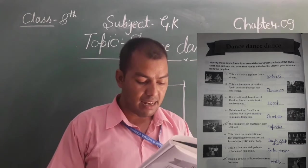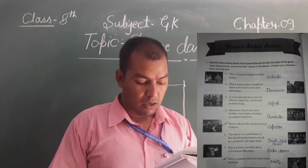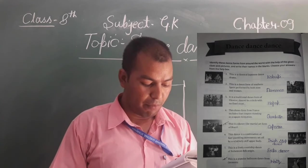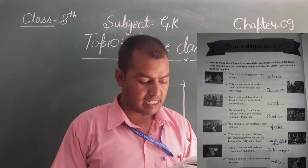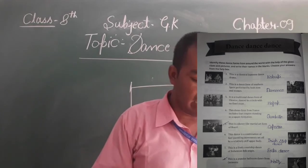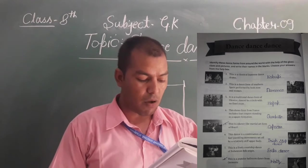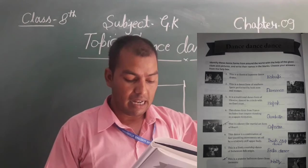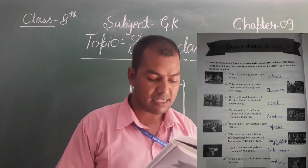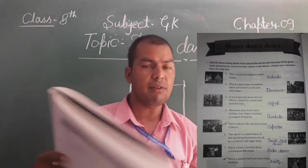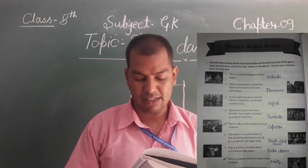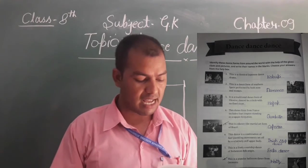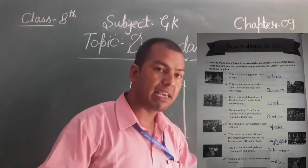Number 7: this is a lively courtly dance of Bohemian folk origin. This dance is called the Bohemian folk dance, and it is also called Polka, typically danced in couples.